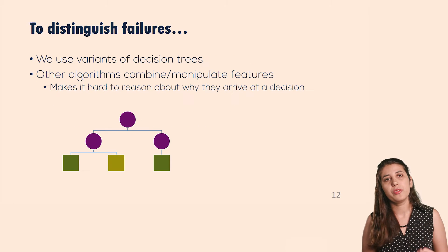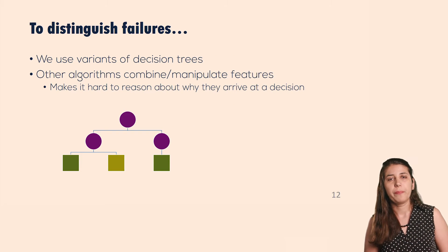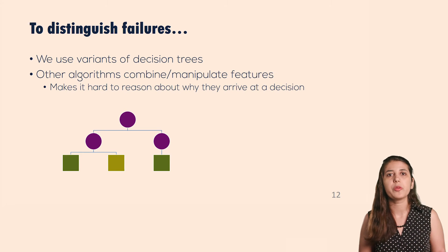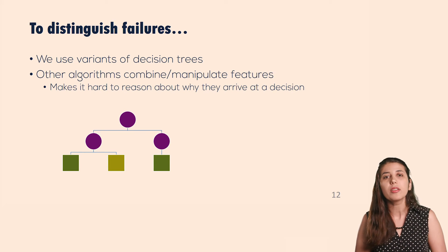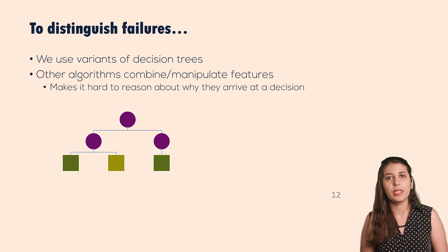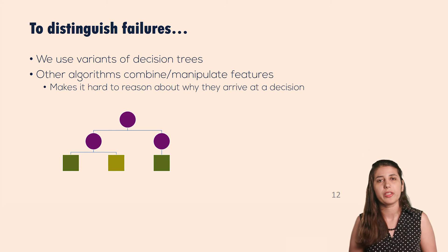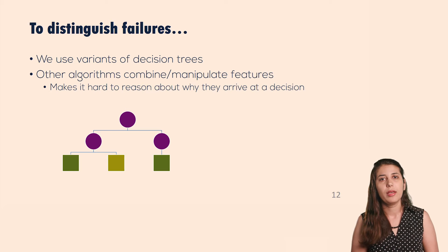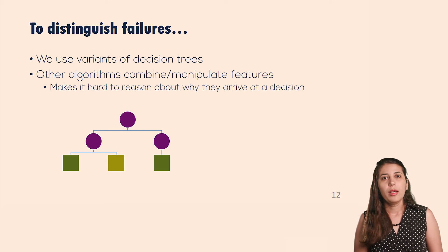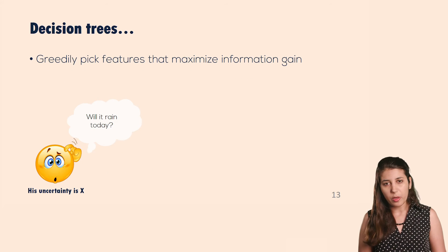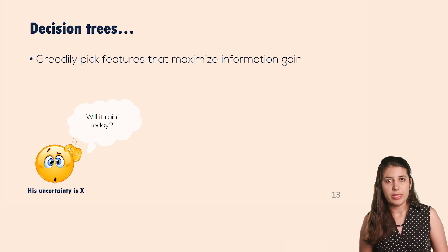That's why we decided to use decision trees. The reason we picked decision trees in particular, as opposed to other machine learning algorithms, is that other machine learning algorithms combine and manipulate features, which makes it hard to reason about why failures happen.